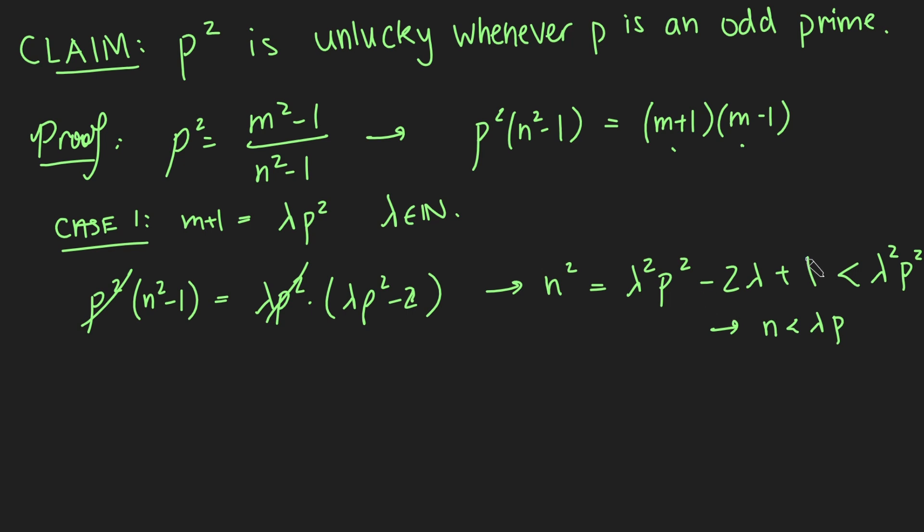Okay, cool. But we can actually build on this and go the other way and say that this thing here must be bigger than, so n squared is bigger than, lambda squared p squared minus 2 lambda p plus 1. Because all I've done here is instead of subtracting 2 lambda, I've subtracted 2 lambda p, so an even bigger number. And so n squared must be bigger than this, but this is precisely lambda p minus 1 squared.